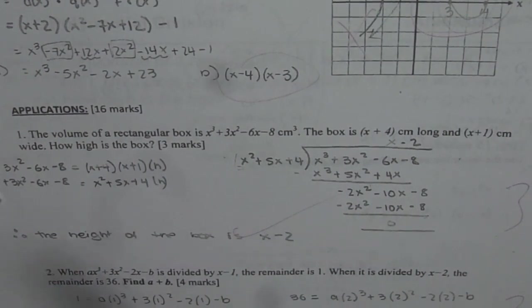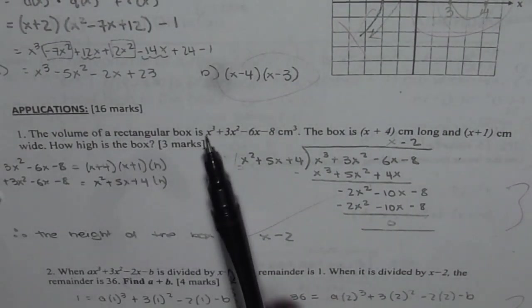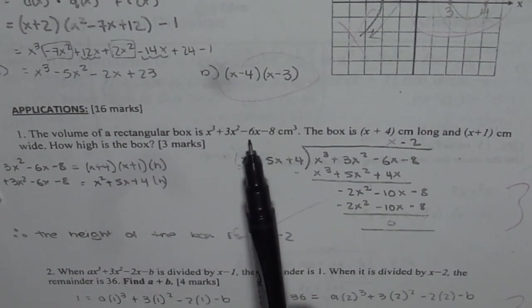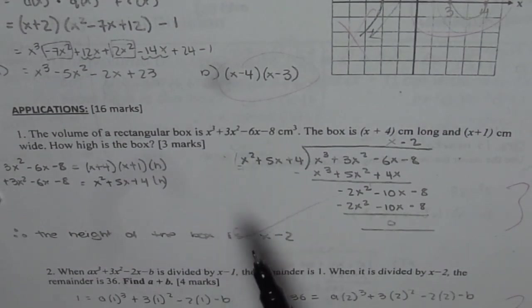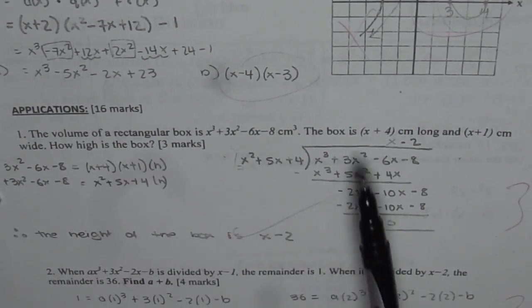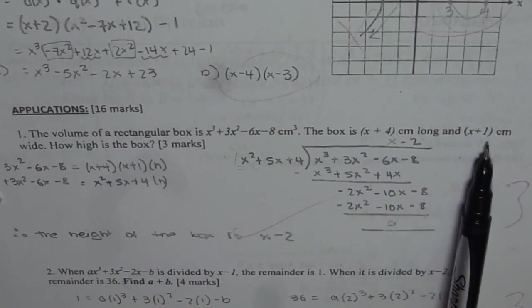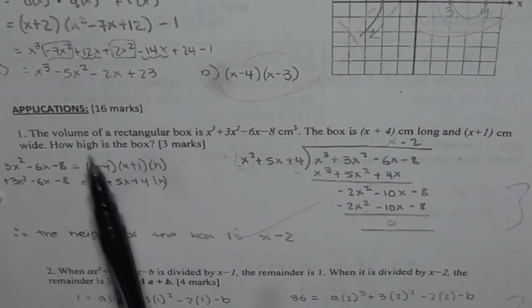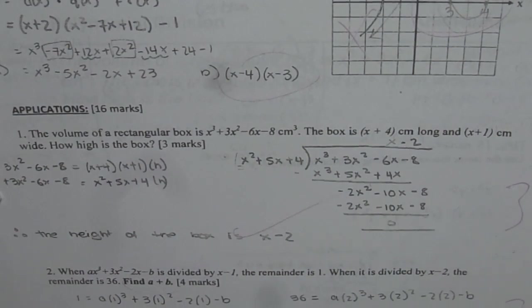The question here is, the volume of a rectangular box is x³ + 3x² - 6x - 8 cm³. The box is (x+4) cm long and (x+1) cm wide. How high is the box? That is the question for you.